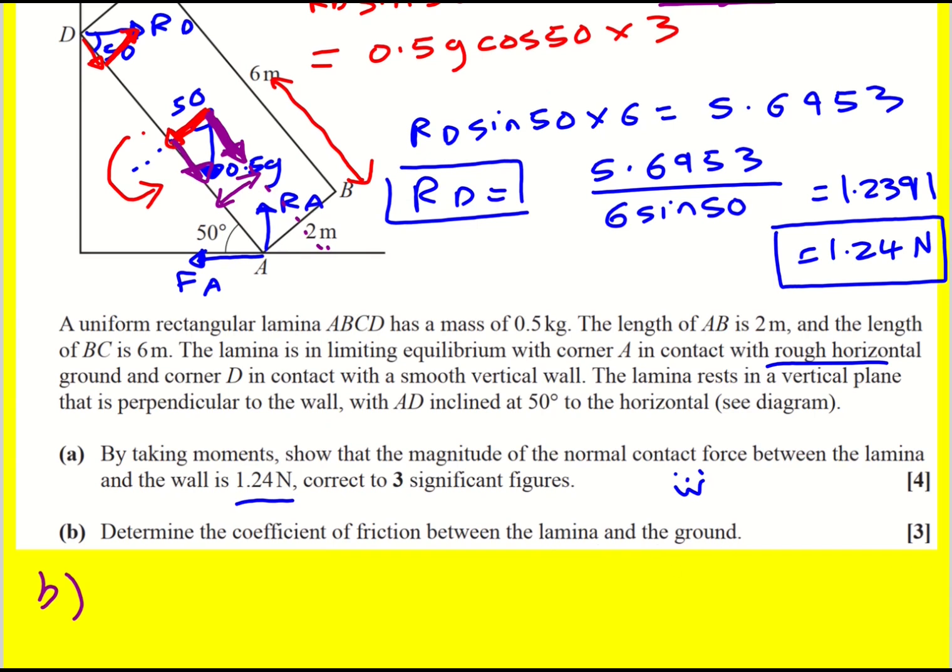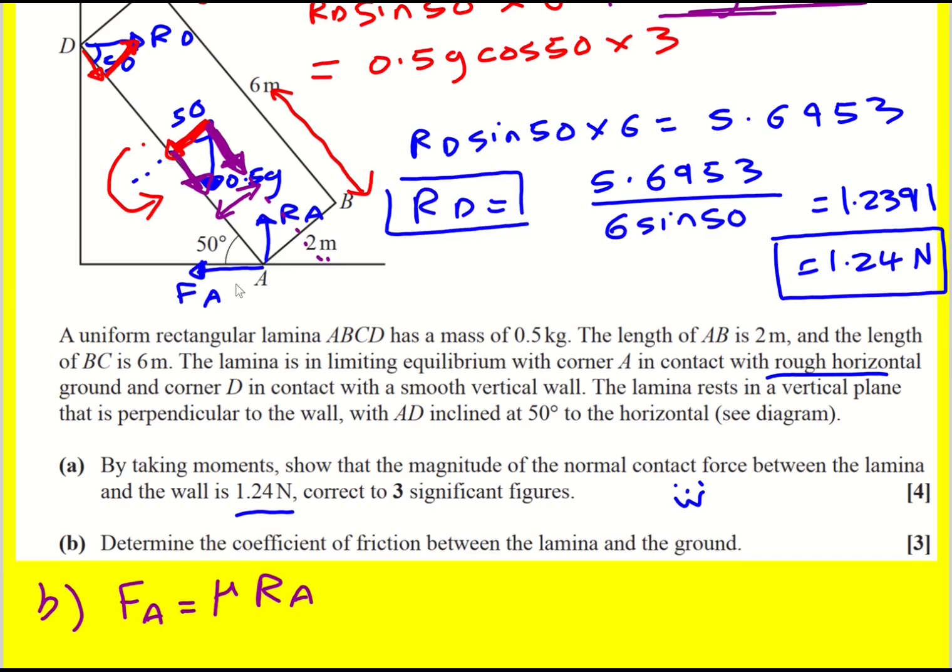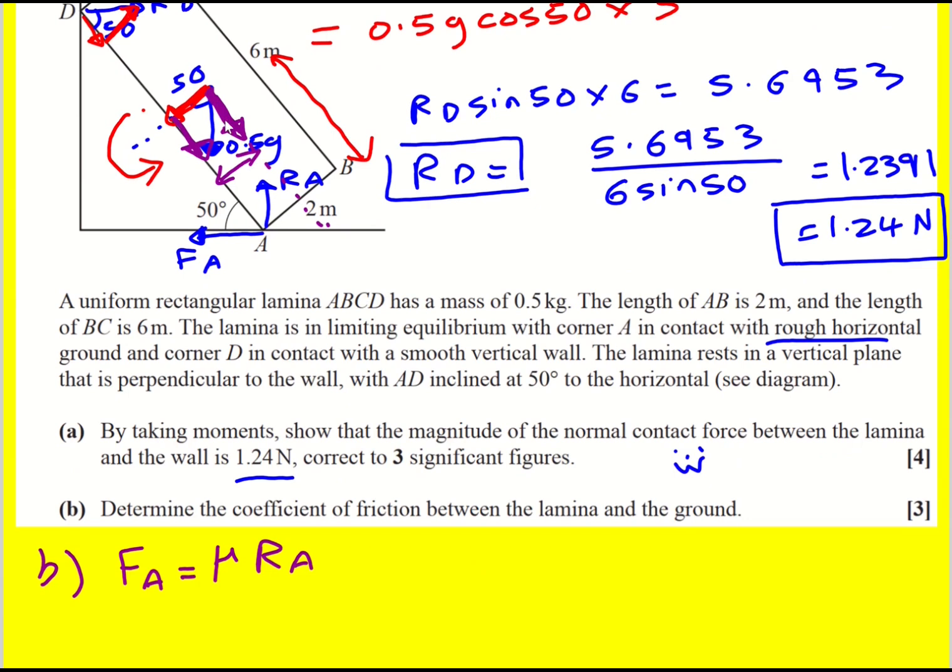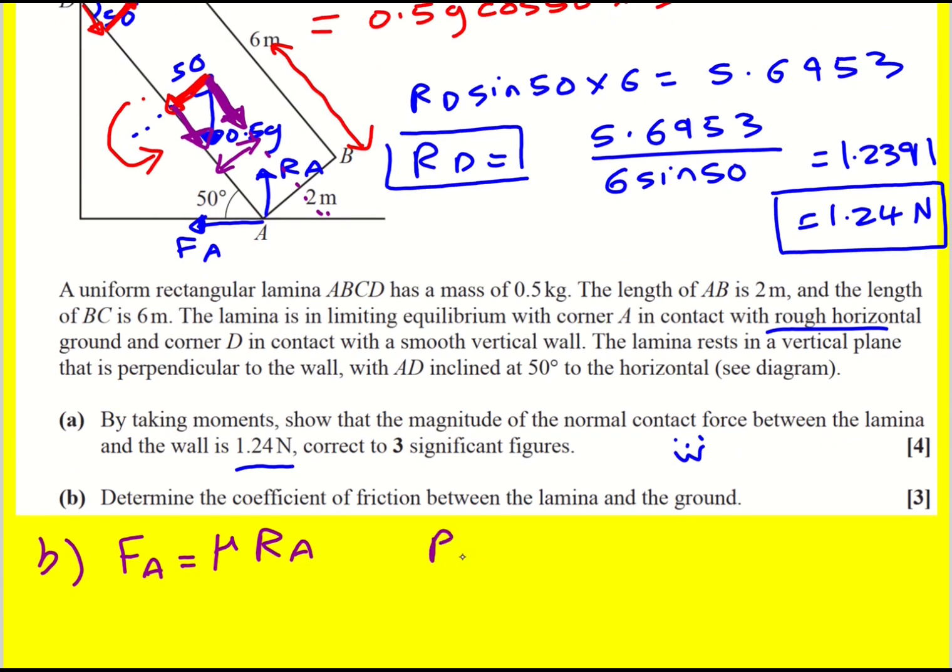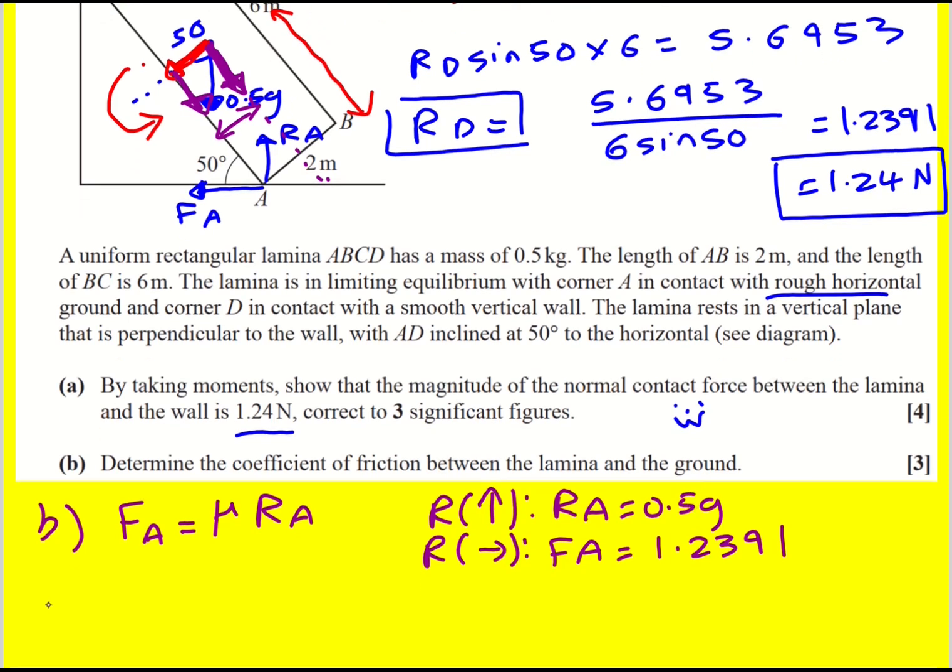We're asked to determine the coefficient of friction between the lamina and the ground. So we know it's in limiting equilibrium. That means FA equals mu RA. And by resolving forces, we can see that the weight 0.5g is going to have to equal RA, by resolving vertically. And then resolving horizontally, we can see that the friction is going to equal this 1.24. So therefore mu is FA over RA. And you just divide them 1.2391 divided by 0.5g, which gives 0.25288 or 0.253.